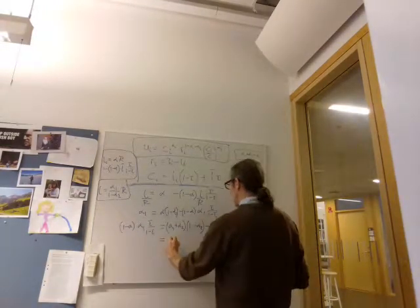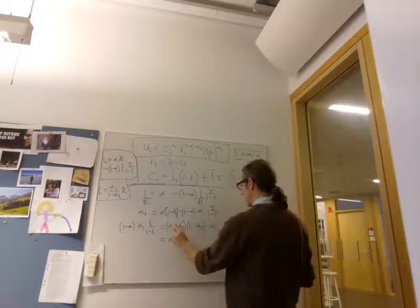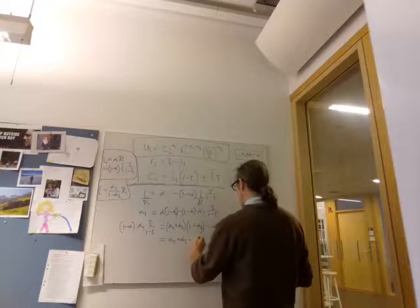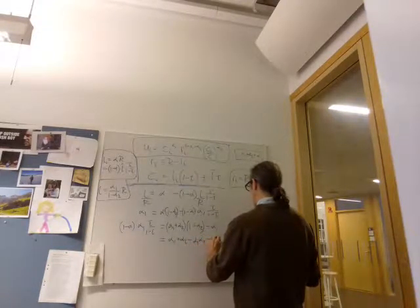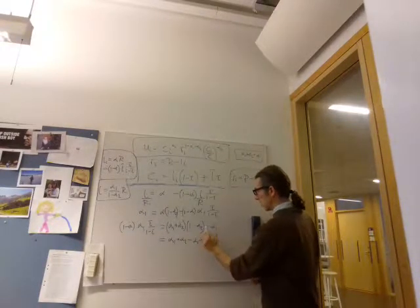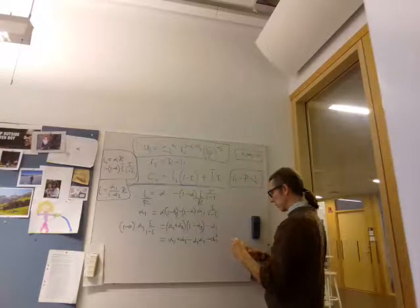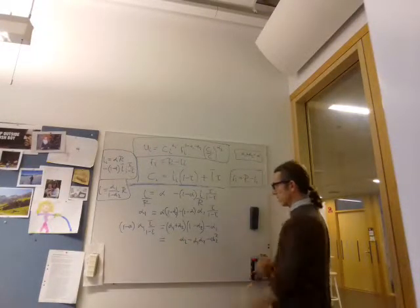When we multiply this out, we have alpha 1 plus alpha 2, that's that bit. So we've got minus alpha 1 alpha 2 minus alpha 2 squared. And then that's that. Then minus alpha 1, which means we can wipe this. So that's that.